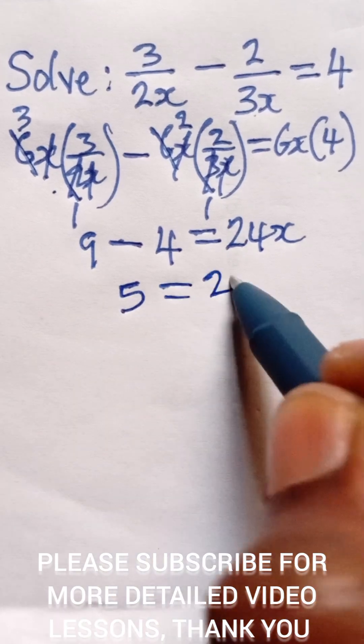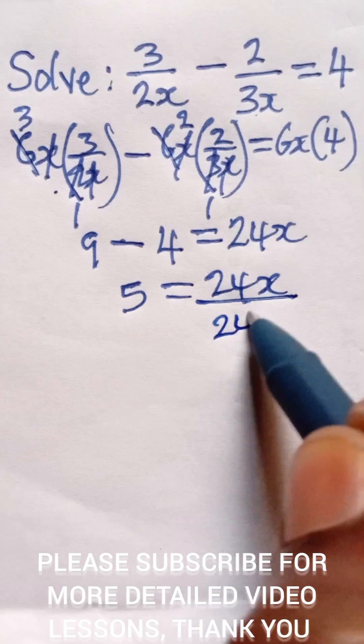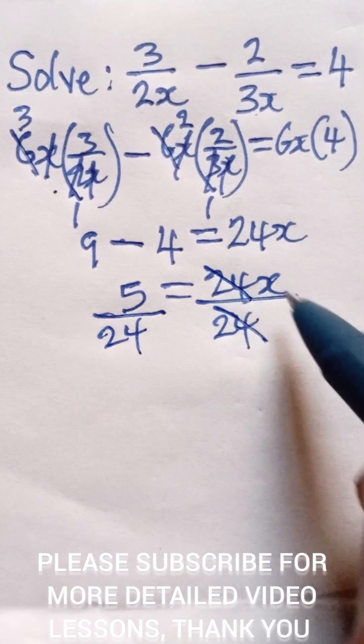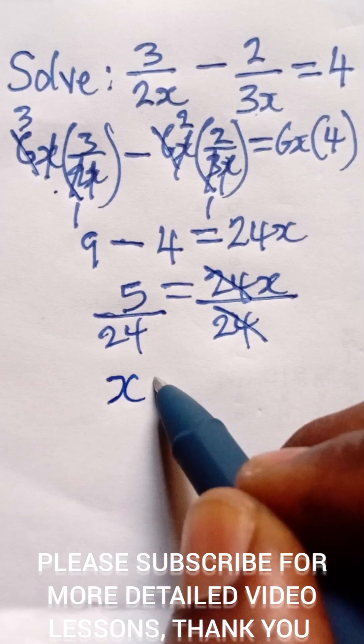We also divide this part by 24, so 24 cancels 24, and we are left with x on this side. So we can write x equals